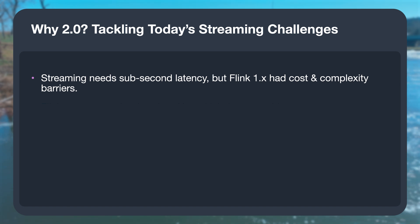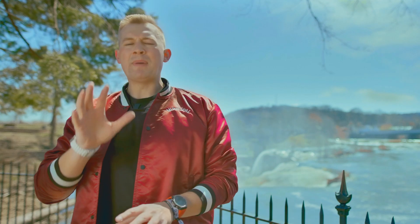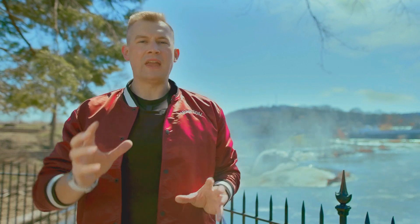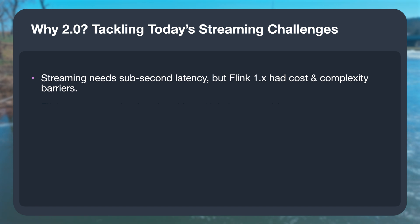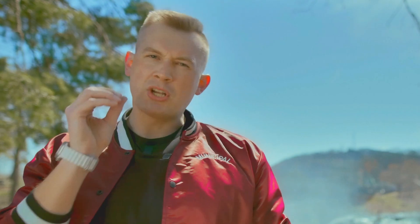So why 2.0? Why is this a big deal? Real-time processing has become the norm. Everyone wants low-latency, event-driven systems these days. But Flink 1.x real-time jobs were kind of expensive and a bit tricky to operate and build. Flink 2.0 fixes that. It's built for cloud-native deployments, data lakehouses, and even AI workloads. The goal: make stream processing cheaper, easier, and more powerful.